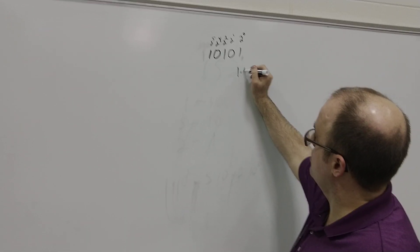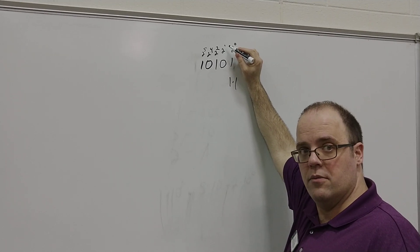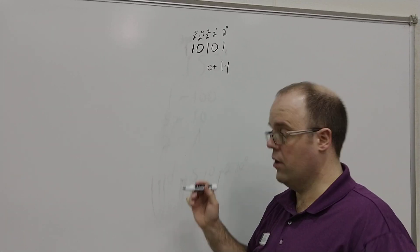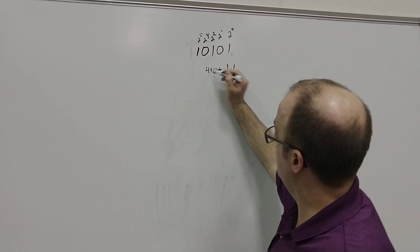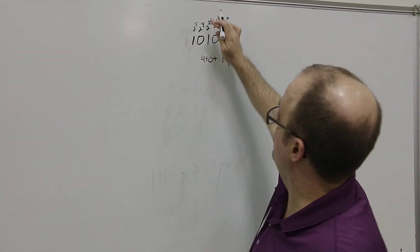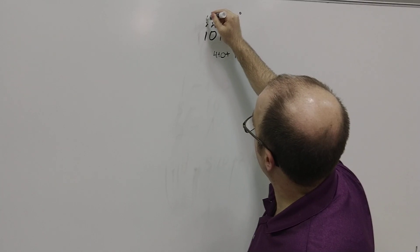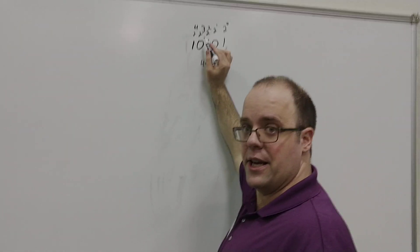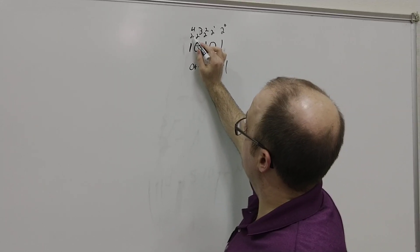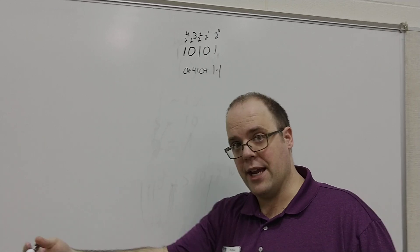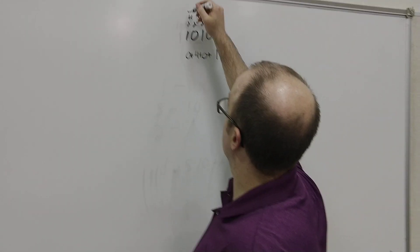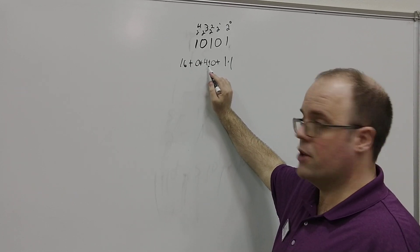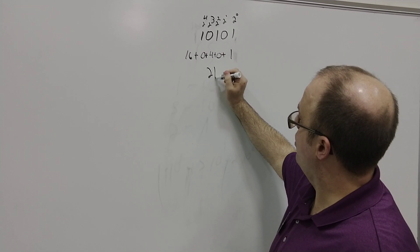So, 1 times 2 to the 0 is 1. 0 times 2 to the 1st, which is 2, is actually 0. 2 to the 2nd is 4, so 4 times 1 is 4. 0 times 2 to the 3rd — 2 times 2 times 2 is 8 — so 0 times 8 is 0. And then 2 times 2 is 4, times 2 is 8, times 2 more is 16. So 16 times 1 goes right here. Then I add it all up: 16 plus 4 is 20, plus 1 is 21 in base 10.